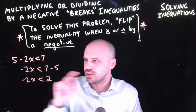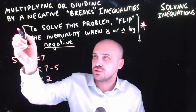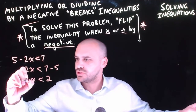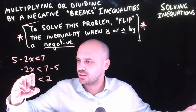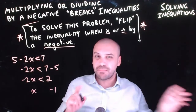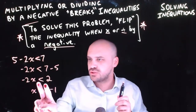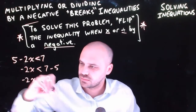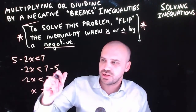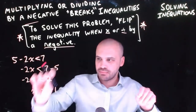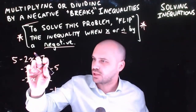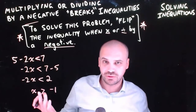Now I need to divide by negative 2 — alarm bells, dividing by a negative. Dividing negative 2x by negative 2 gives x, and dividing 2 by negative 2 gives negative 1. But because I've divided by a negative, I need to flip the inequality. The left and right sides have undergone that rotation, so flipping the sign solves the problem.